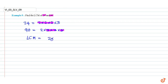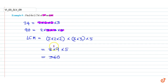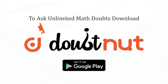Therefore the LCM is 2 × 2 × 2 × 3 × 3 × 5, which is equal to 8 × 9 × 5, which is equal to 360. That is our answer.